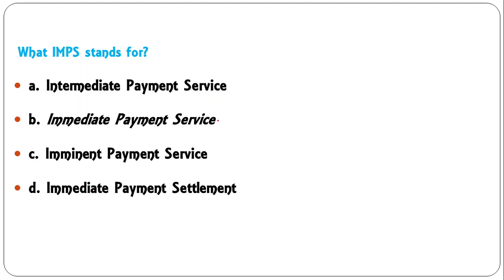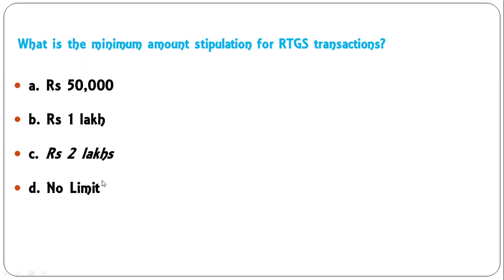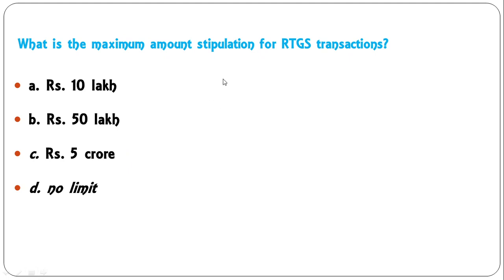What does IMPS stand for? The options are: intermediate payment service, immediate payment service, imminent payment service, immediate payment settlement. The correct full form is immediate payment service — B is correct. What is the minimum transaction amount for RTGS? The options are: ₹50,000, ₹1 lakh, ₹2 lakh, or no limit. The minimum transaction under RTGS is ₹2 lakh — C is correct. RTGS is used for larger amounts of money, which is why this minimum is kept at ₹2 lakh.